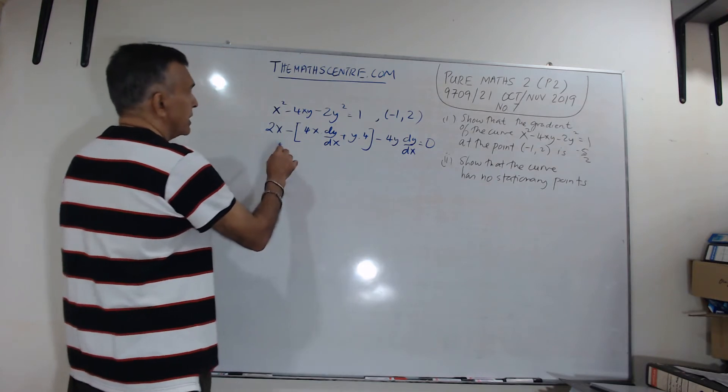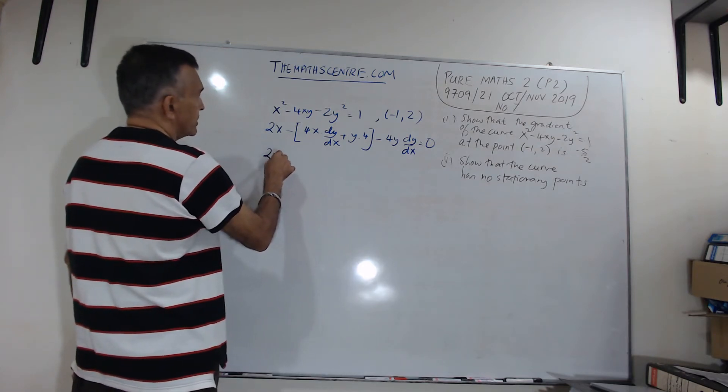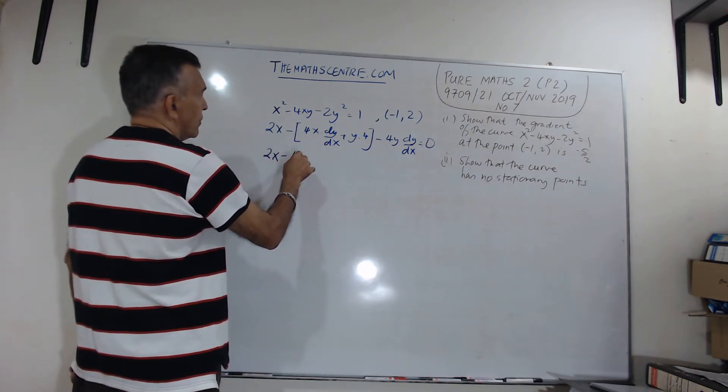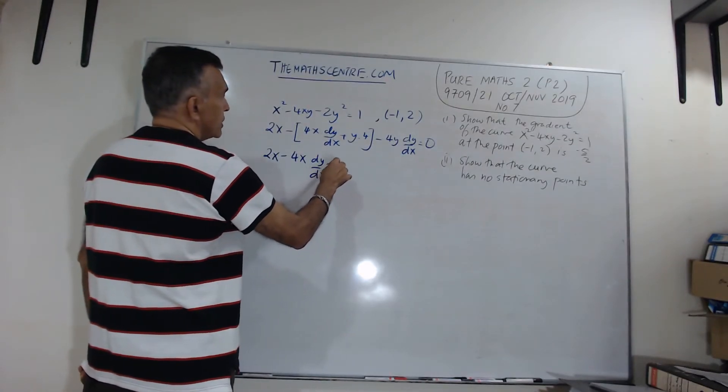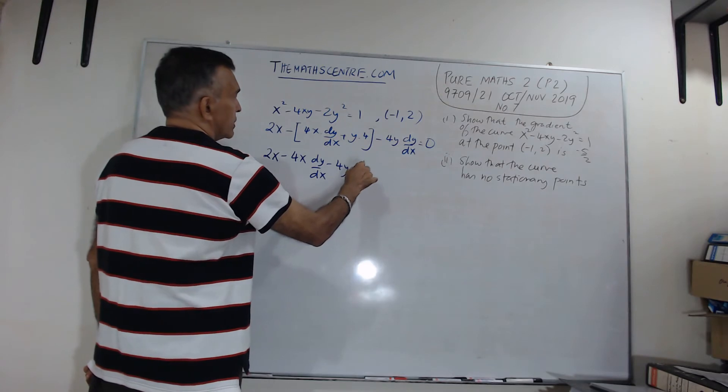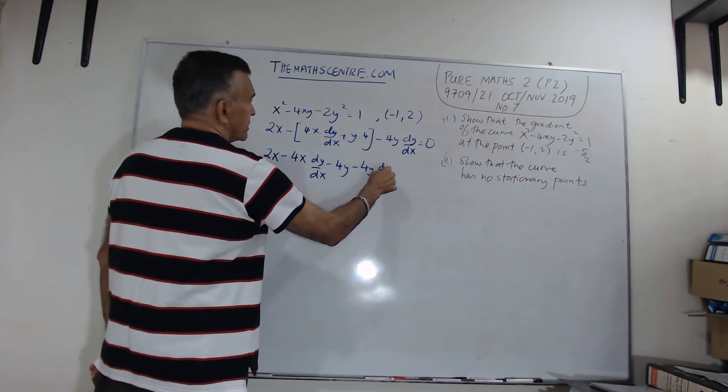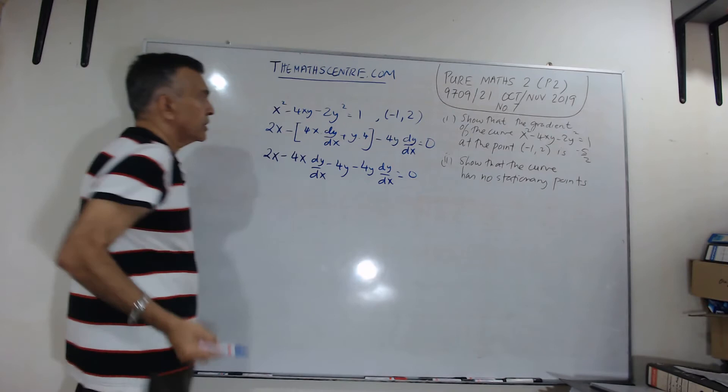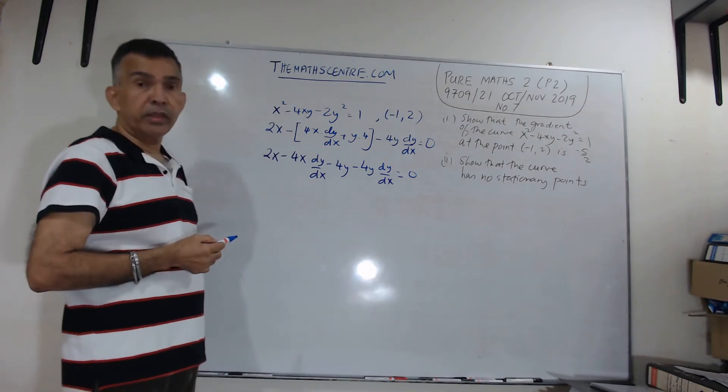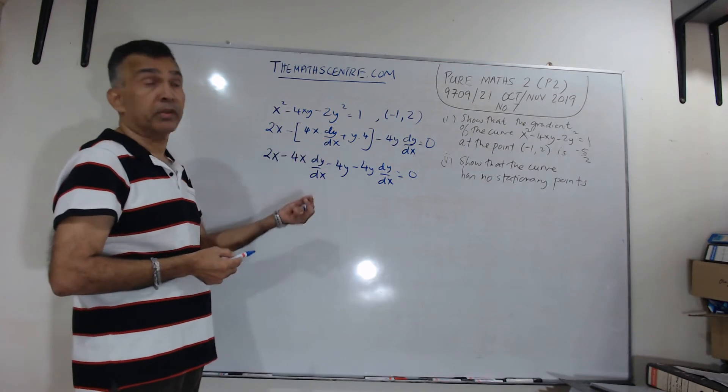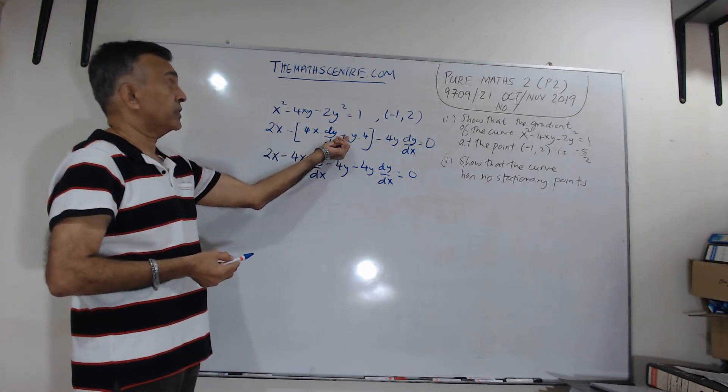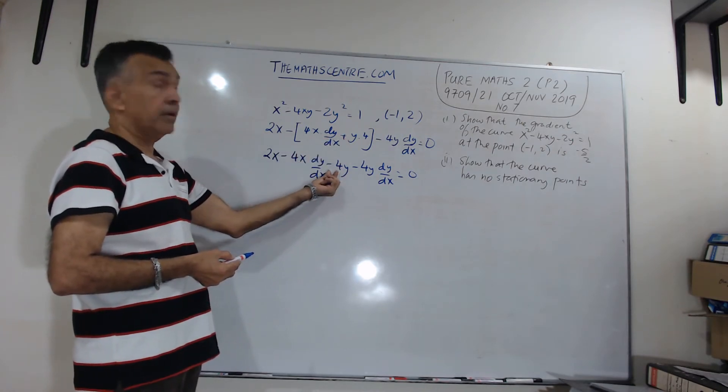So, let's clean this up a little bit. I have got 2x - 4x dy/dx - 4y - 4y dy/dx = 0. So, if you're going to apply the UV rule without using brackets, just be a bit careful. There's a plus here. So, when you open it up, it becomes minus.